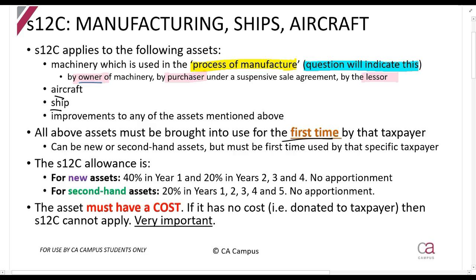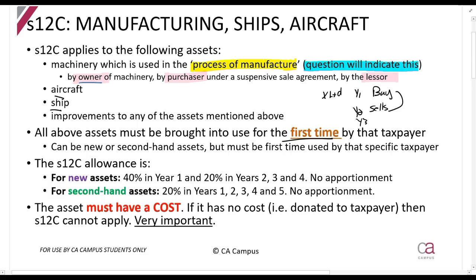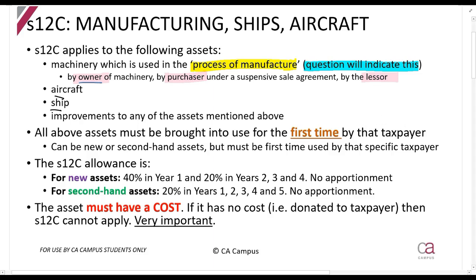For manufacturing assets — the most important category — you can only claim Section 12C if you are using the asset for the first time. This does not mean it must be a new asset; it means it must be the first time you are using it. For example, if X Limited buys a machine in year one, sells it in year two, and buys it back in year three, they cannot claim Section 12C in year three because it is not the first time they used it.